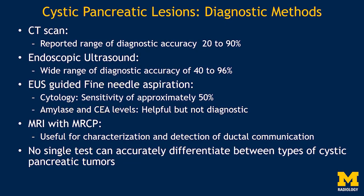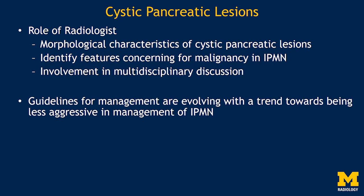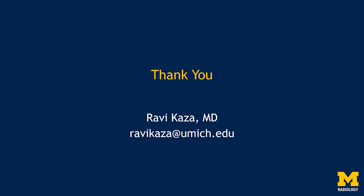Regarding diagnostic methods for evaluating cystic pancreatic lesions, all imaging modalities have varying ranges of diagnostic accuracy, and no single test can accurately differentiate between types of cystic pancreatic tumors. As a radiologist, our role is important in identifying morphological characteristics of cystic pancreatic lesions, identifying features concerning for malignancy in IPMN, and being involved in multidisciplinary discussion. Guidelines for management are evolving with the trend towards being less aggressive in management of IPMN.